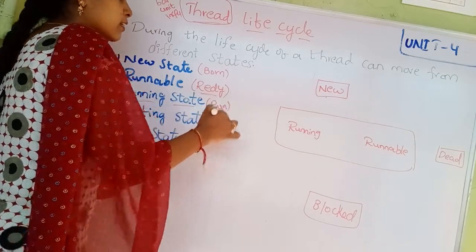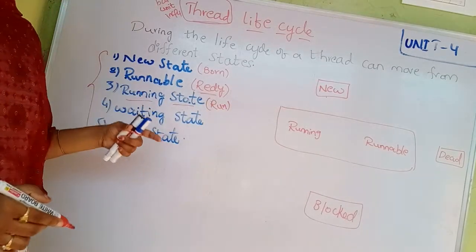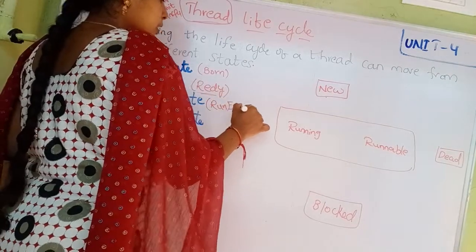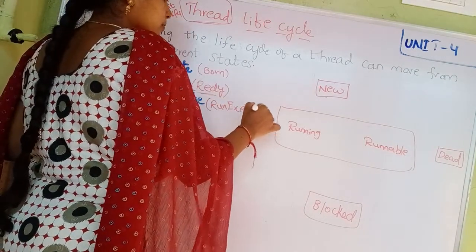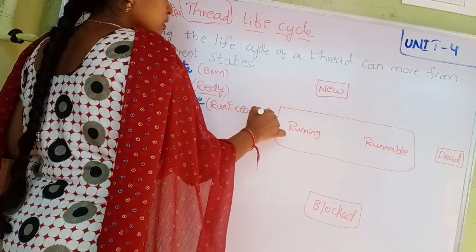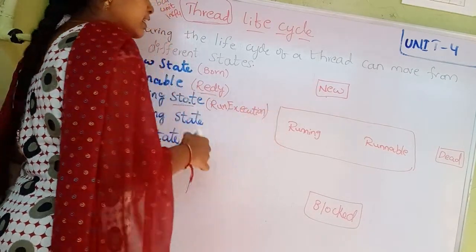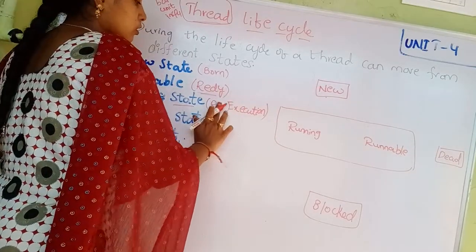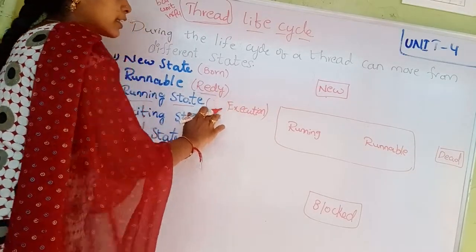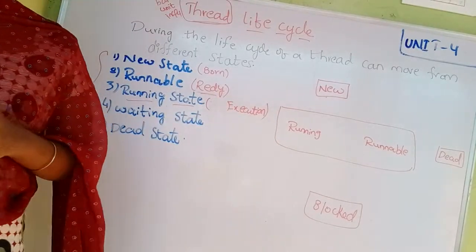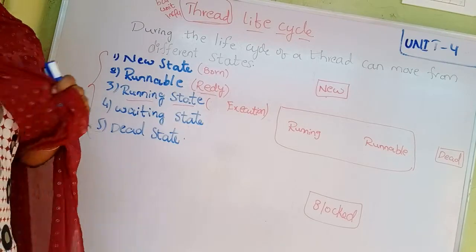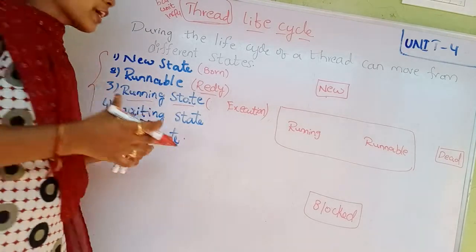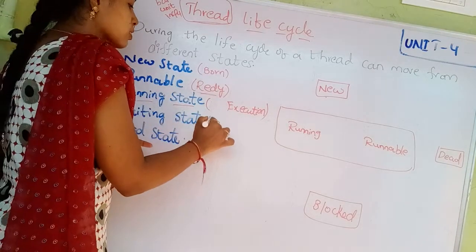Running state means the thread is executing. After that comes the waiting state, which we can also call the block state.